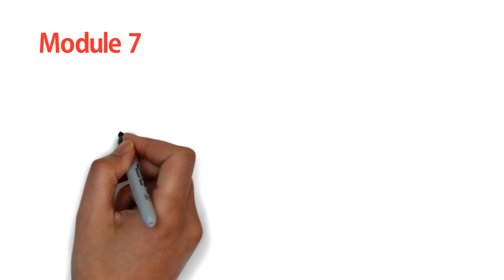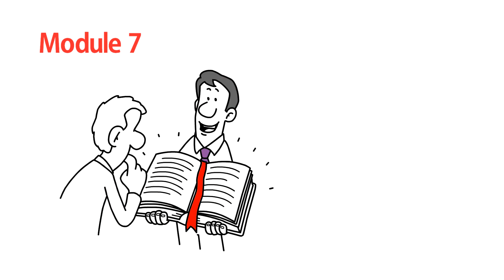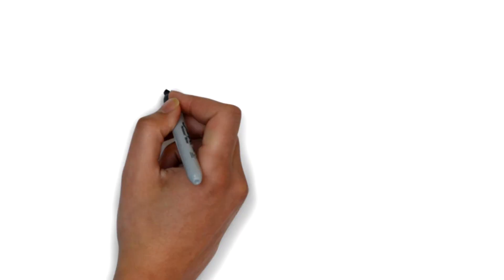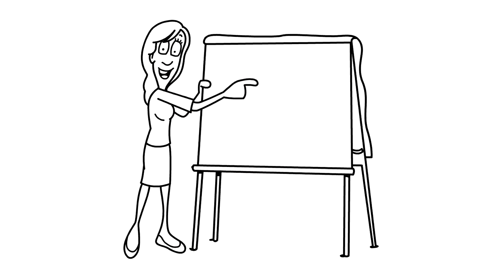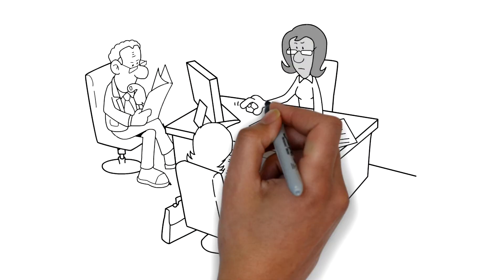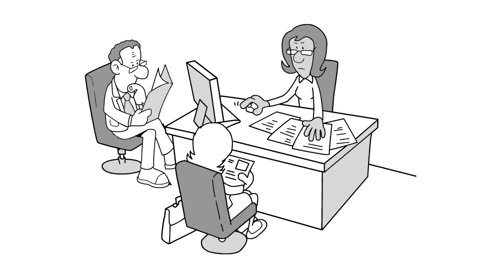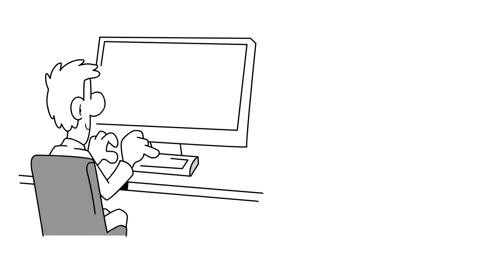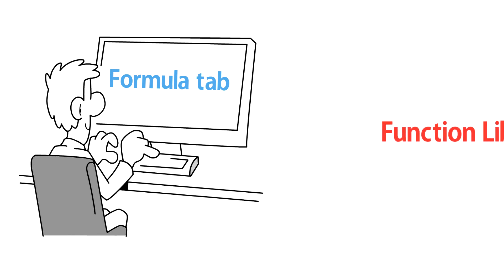In module 7, participants will learn about basic Excel functions, including SUM and AutoComplete. They will also learn the functions in the formulas tab and learn the function names. Participants will be taught when to use a formula and when to use a function. The formulas tab is used to help create functions, and users can access functions in the function library.